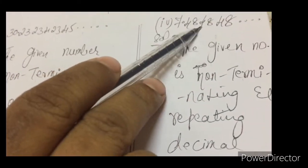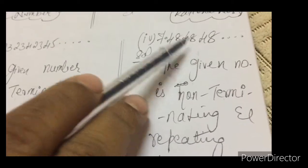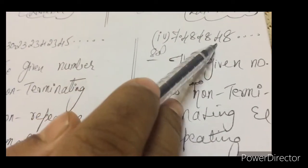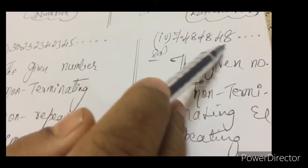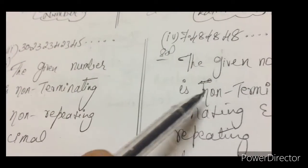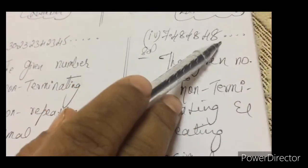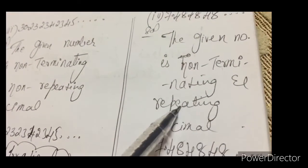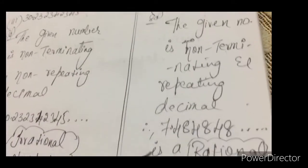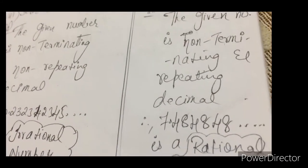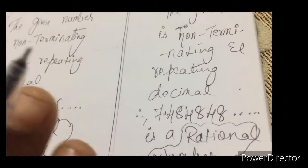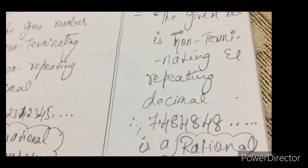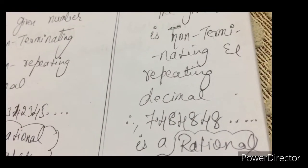7.484848, please observe. Here after 7, this 4848 is continually only. 48 is repeating. So that is why this is non-terminating, it is not stopping, it is so on. So it is non-terminating but it is a repeating decimal. Therefore this number is a rational number. You have to understand this first problem very carefully because second problem will be homework for you students.